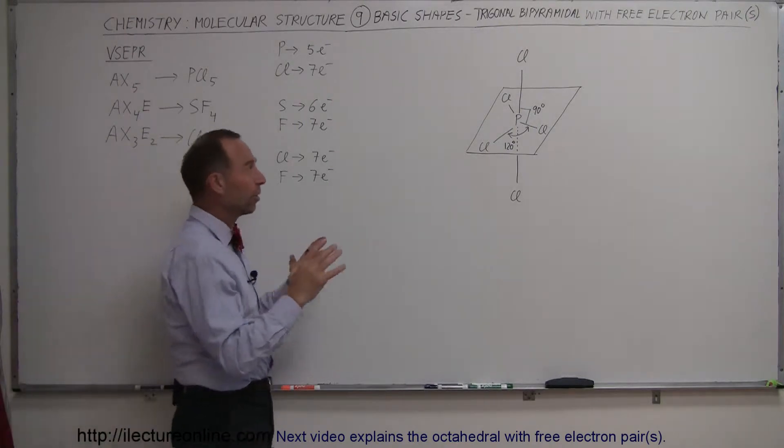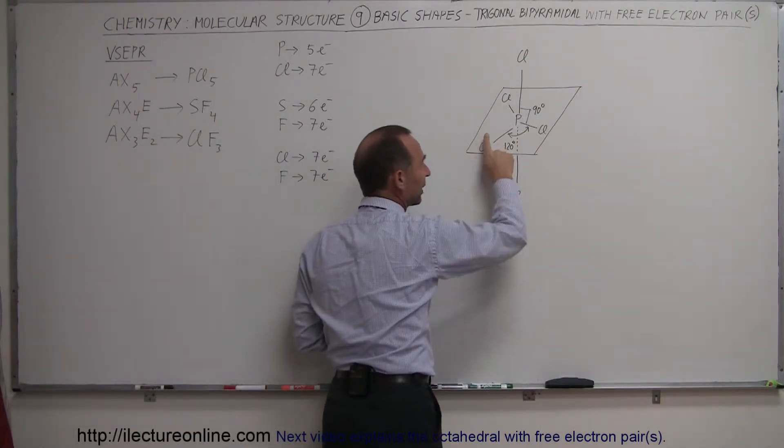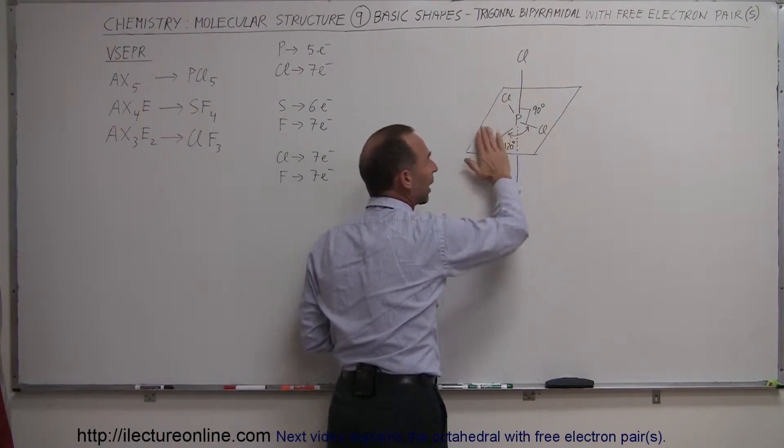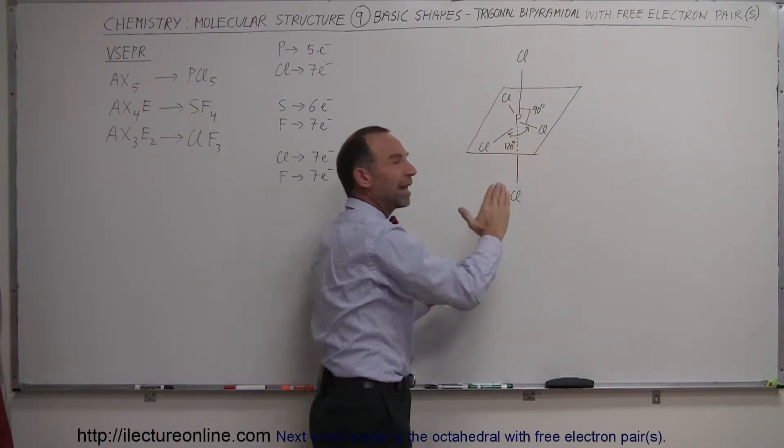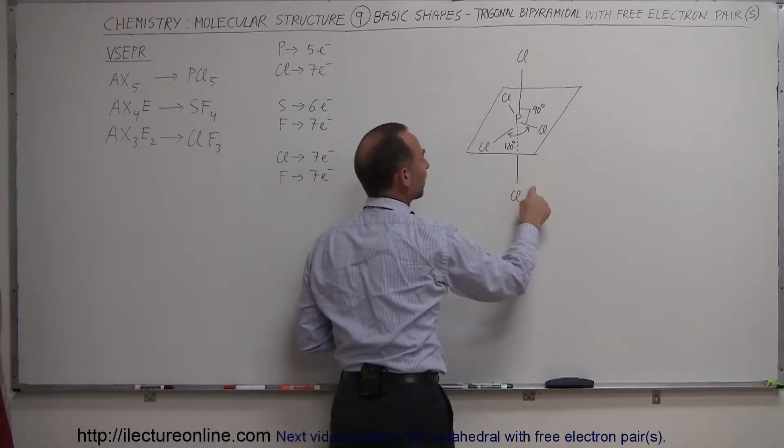So what happens is we have the central atom, phosphorus, we have three chlorines in the plane around phosphorus. That forms the base of the two pyramids, one sticking up, one sticking down. And then we have one atom up here, one atom up there.